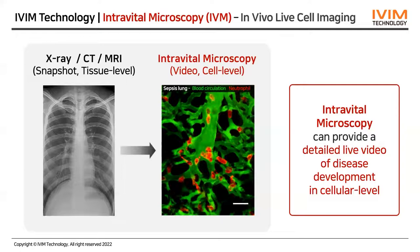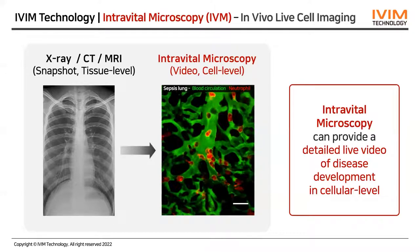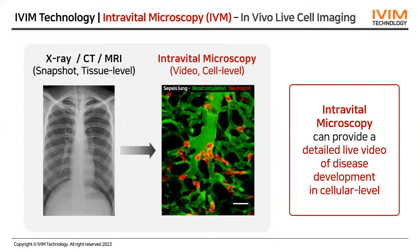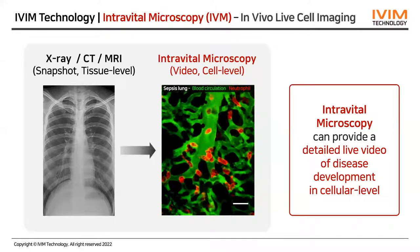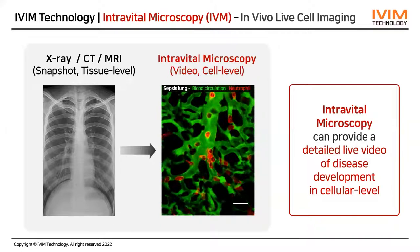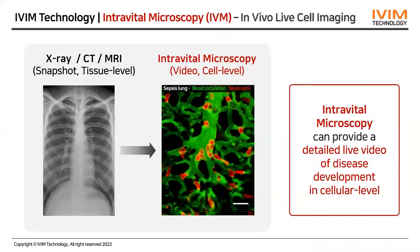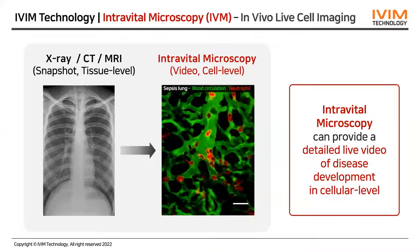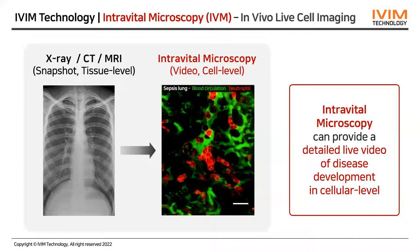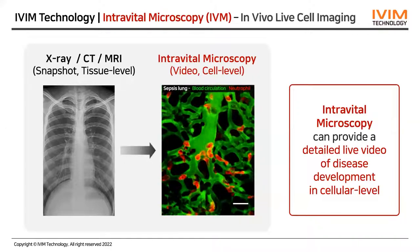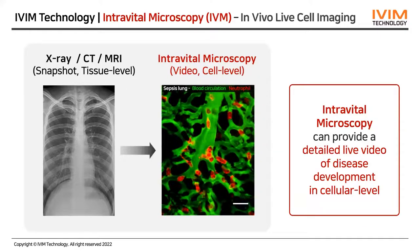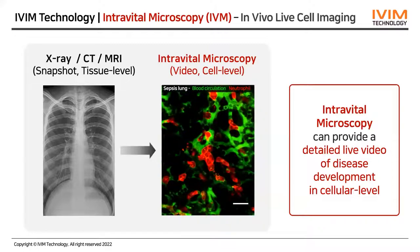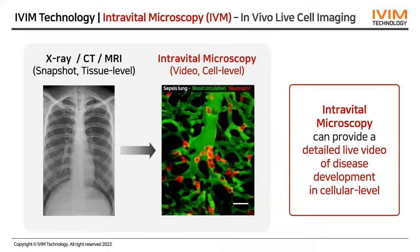I would like to introduce iBeam's intravital microscopy to observe live tissue and cells in live animals. While X-ray, CT, and MRI imaging technology provides only static and tissue-level information in a living object, intravital microscopy can provide a detailed live cell-level video of disease development, as illustrated in this example video. Intravital microscopy is an extremely powerful tool that enables imaging several biological processes in live animals in a long-term manner.